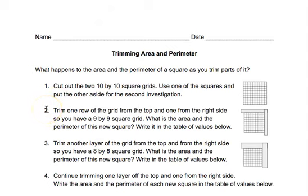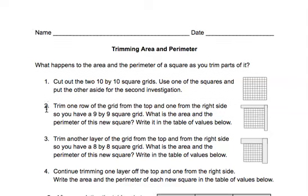Okay, trim one row of the grid from the top and one from the side so you have a 9 by 9 square grid. What is the area and what is the perimeter of the new square? Write it in the tables below.